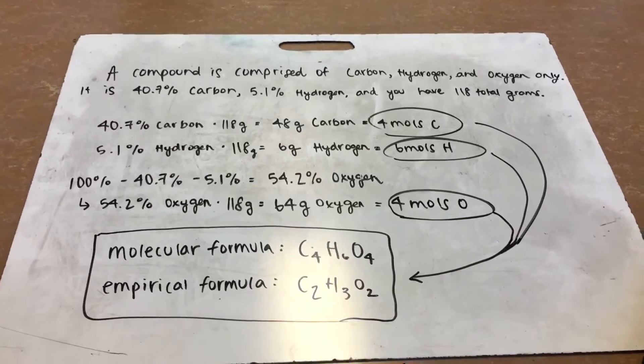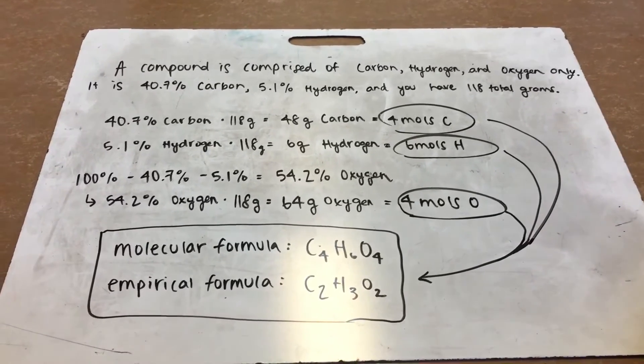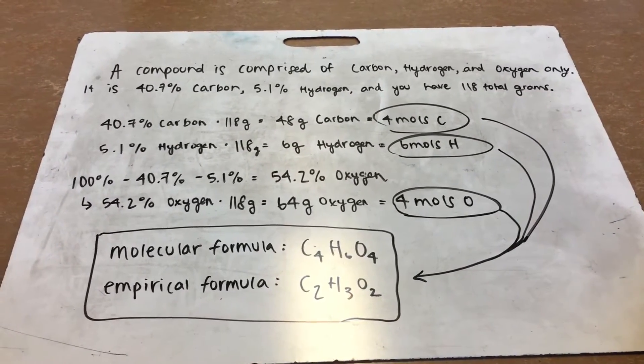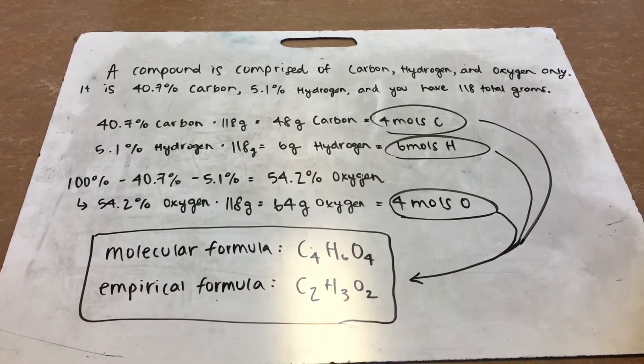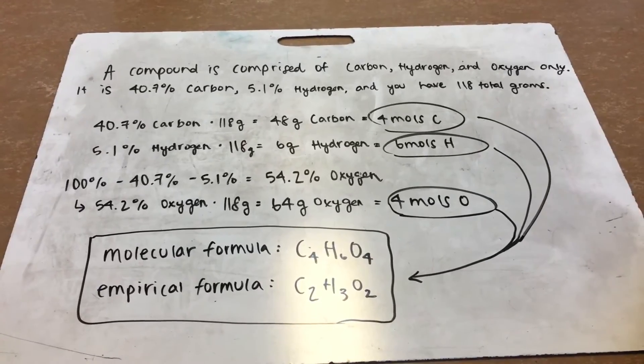Alright, today we are going to do empirical and molecular formulas. So our sample problem is a compound is comprised of carbon, hydrogen, and oxygen only. It is 40.7% carbon, 5.1% hydrogen, and you have 118 total grams.